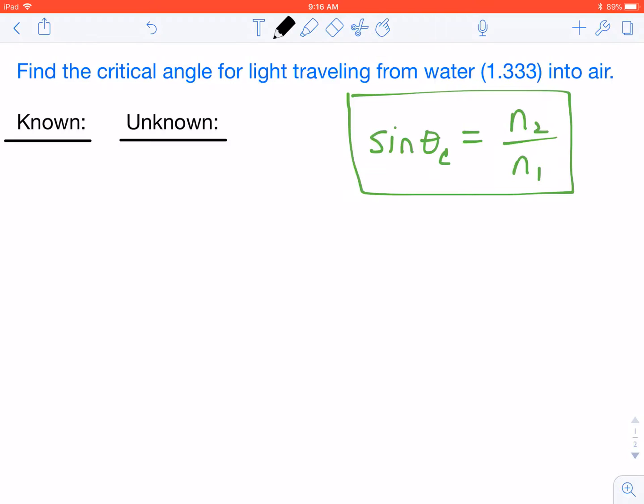As we take a look at this first example, it says find the critical angle for light traveling from water into air. There's a couple of things that we know. We're going from water, and they give us the index of refraction for water, and into air. The thing we're trying to solve is the critical angle.